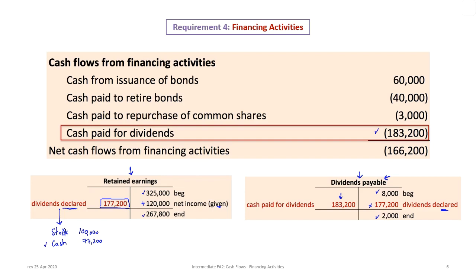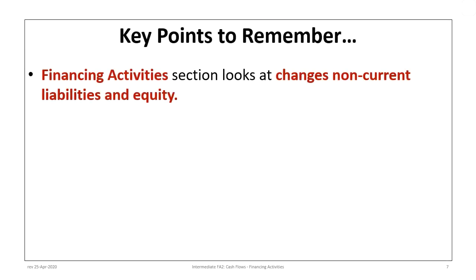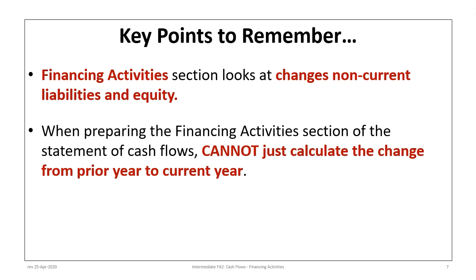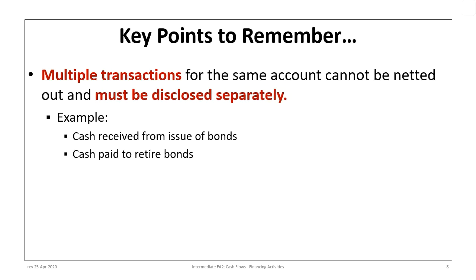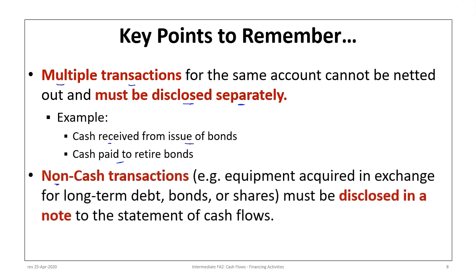Key points to remember: the financing activity section looks at changes in non-current liabilities and equity. Just as with the investing section, we cannot simply calculate the change from one year to the next — we must reconstruct the relevant accounts to identify specific changes. When there are multiple transactions for the same account, they must be disclosed separately; for example, cash received from issuing bonds and cash paid to retire bonds cannot be netted. Non-cash transactions, such as equipment acquired in exchange for bonds or shares, must be disclosed in a note to the statement of cash flows.